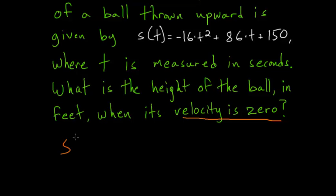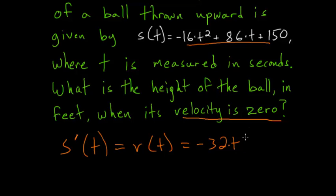The derivative, or the rate of change of this function which gives the height of the ball at time t, is equal to the velocity function. Let's take the derivative of this right-hand side using the power rule. We'll bring the 2 down in front, so we have -32t, plus 86. The derivative of a constant is always 0.